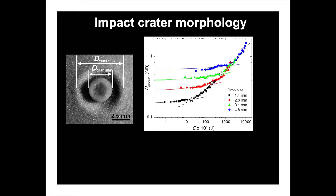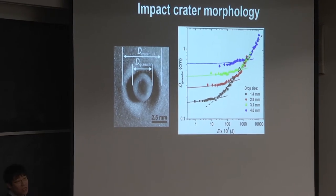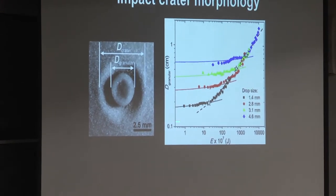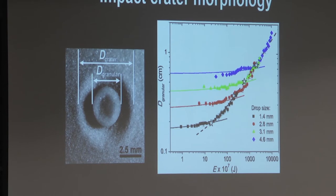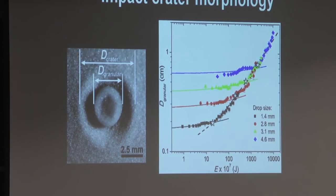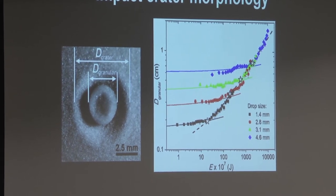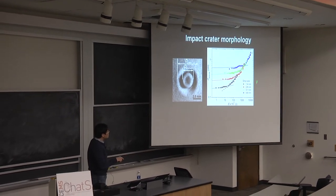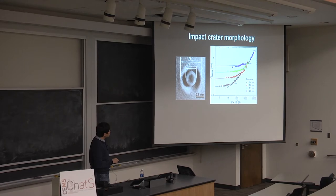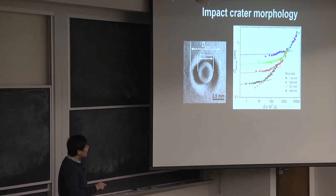An undergrad student in my lab started the measurement here. He measured the size of the granular residue — how big this bowl shape is — as a function of impact energy, essentially the kinetic energy of the raindrop. The general trend is the larger the impact energy, the larger the granular residue. The different curves correspond to different drop sizes, varied from 1.4 millimeters up to 5 millimeters, which essentially covers the range for natural raindrops. There are two regimes: at low impact energy you get a slow increase, but above a certain energy it starts to shoot up.